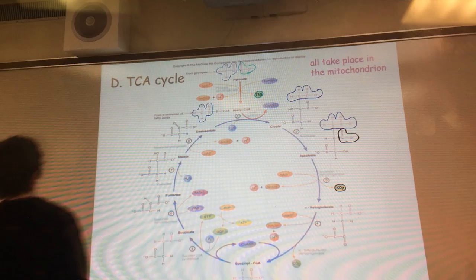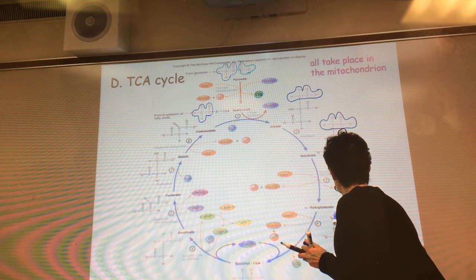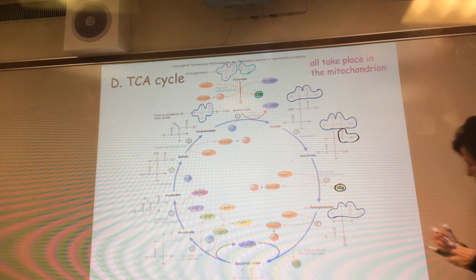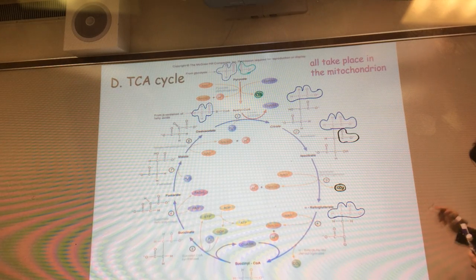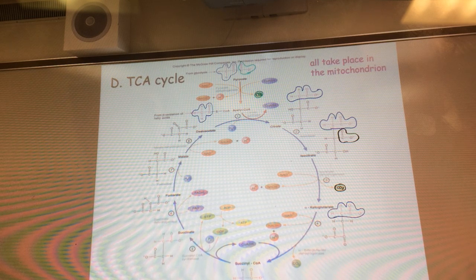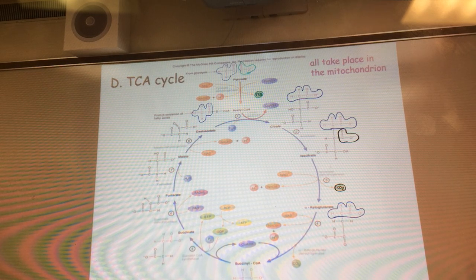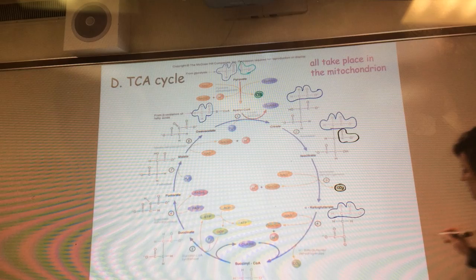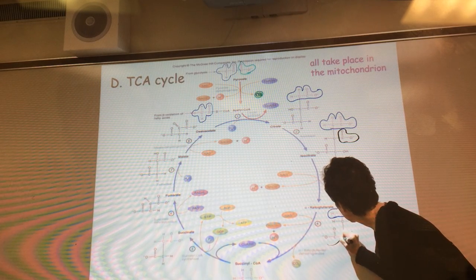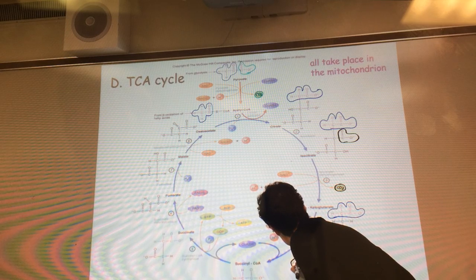And then when we decarboxylate again, where does that one come from? Yeah, so the last carbon down here. So this carbon becomes that carbon of carbon dioxide.